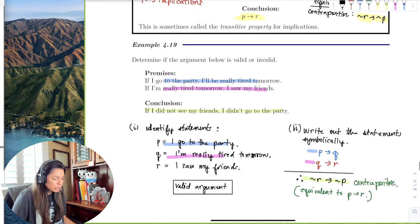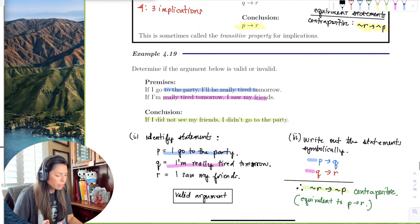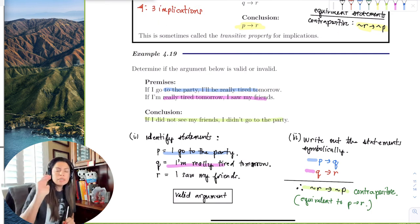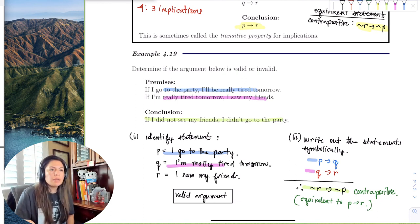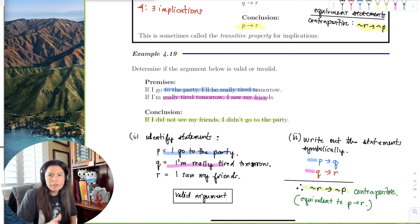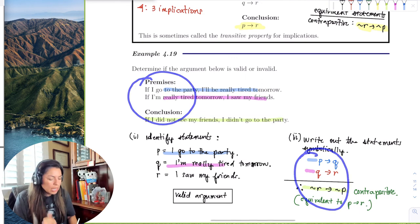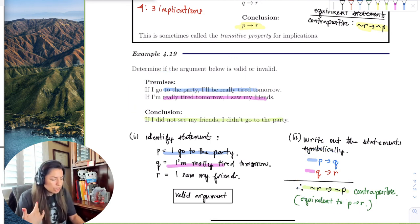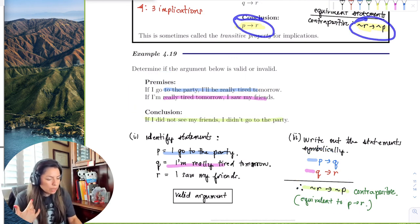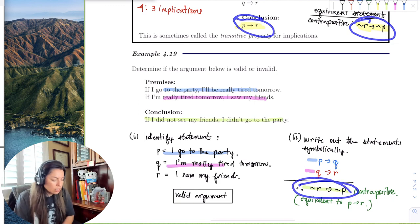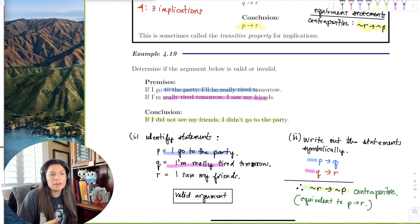So with syllogism is used for, again, three implications. If you see premises and conclusions to be if, then, if, then, if, then, go directly to this area and apply a syllogism. Identify the statements and rewrite this area symbolically. And then if you get the implication or the contrapositive, like in this case, we got the contrapositive, then it will be a valid argument. So here that's happened.